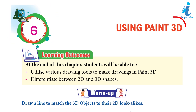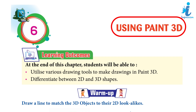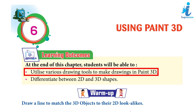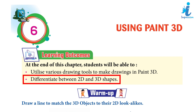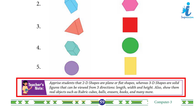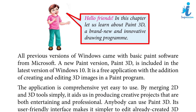Chapter 6: Using Paint 3D. Learning outcomes: at the end of this chapter, students will be able to utilize various drawing tools to make drawings in Paint 3D, and differentiate between 2D and 3D shapes. Warm up: draw a line to match the 3D objects to their 2D object look-alikes. Teacher's note: apprise students that 2D shapes are plain or flat shapes, whereas 3D shapes are solid figures viewed from three directions — length, width, and height. Show them real objects such as Rubik's cubes, balls, razors, books, and many more.